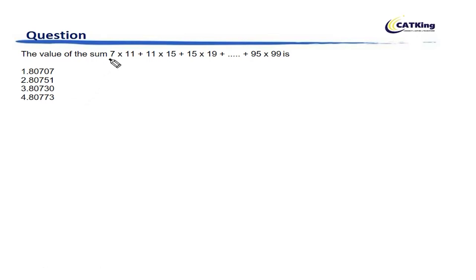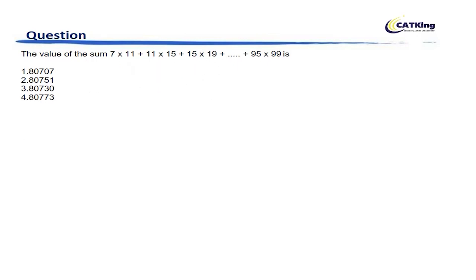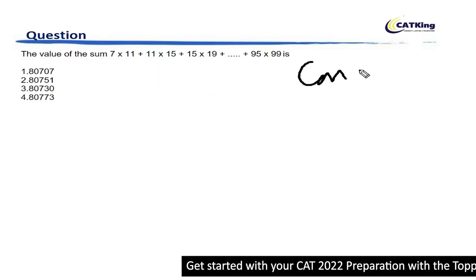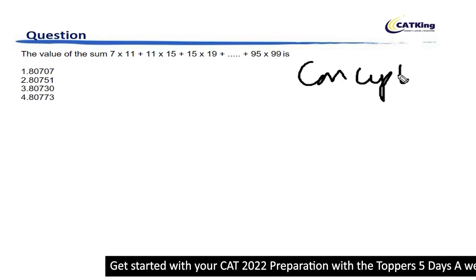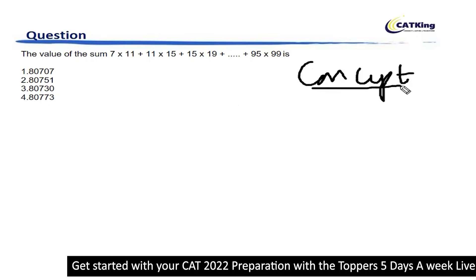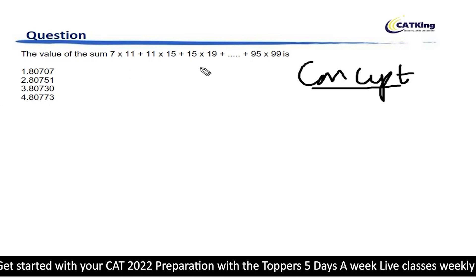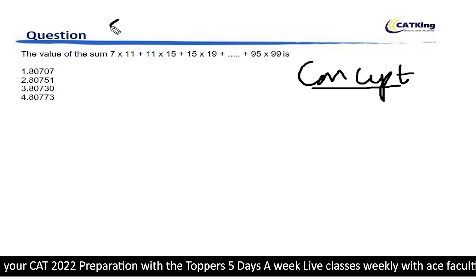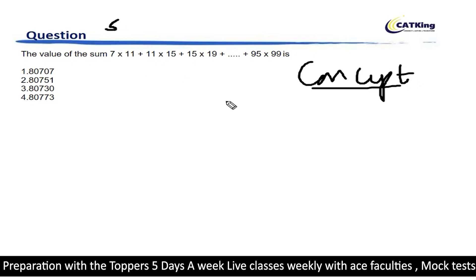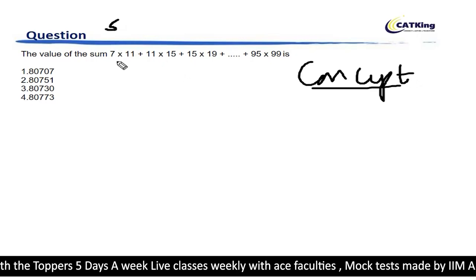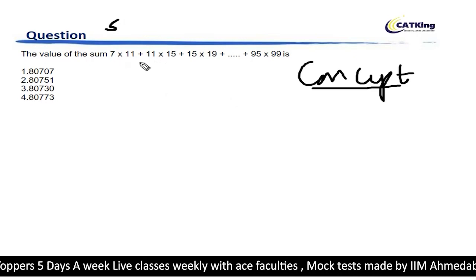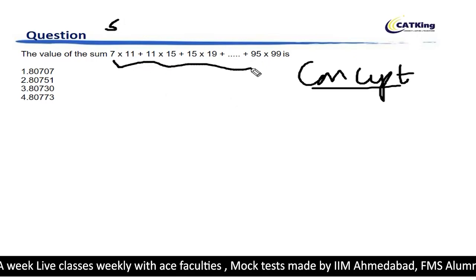The value of the sum 7 into 11, 11 into 15, 15 into 19 — so whenever we have something like this, what we have to do first is find the general term. We have to take the general term and express the general term of this whole expression.